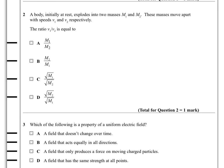A body initially at rest explodes into two masses M1 and M2. These masses move apart with speeds V1 and V2 respectively. The ratio of V1 over V2 is equal to one of these things.